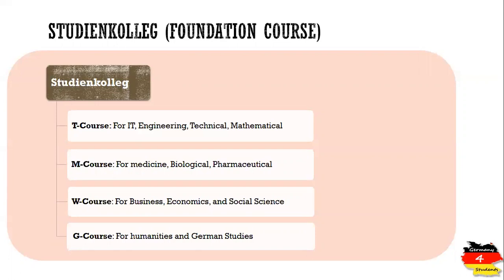The third type is W course. If you are interested in business economics or social science programs, then you will select W course. The fourth is G course, which is required for students who are interested in humanities or any German studies. So these are the four types of courses under Studienkolleg, or the foundation course.